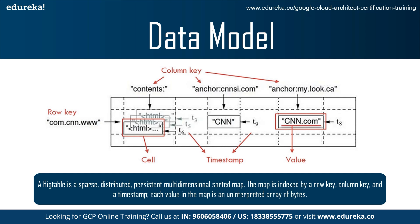In this figure, you can see a slice of an example table that stores web pages. The row name is a reversed URL. The contents column family contains the page contents, and the anchor column family contains the text of any anchors that reference the page. CNN's home page is referenced by both the Sports Illustrated and the My Look home pages, so the row contains columns named anchor:cnnsi.com and anchor:mylook.com. Each anchor cell has one version. The contents column has three versions at timestamps t3, t5, and t6.